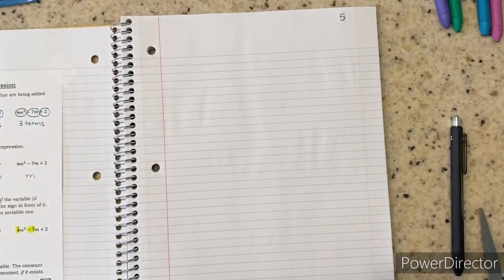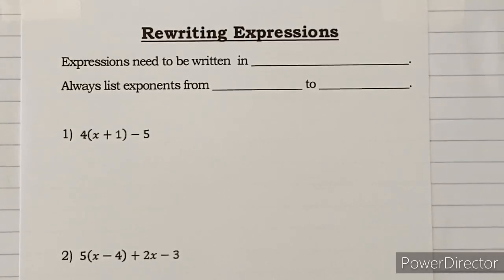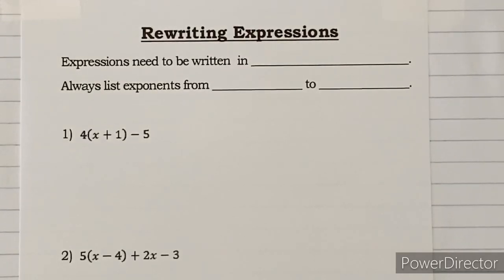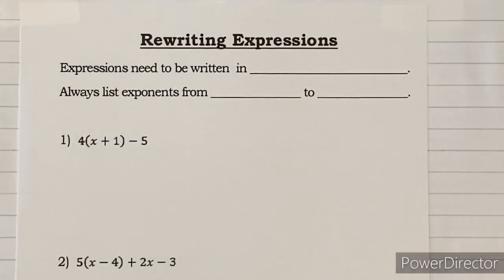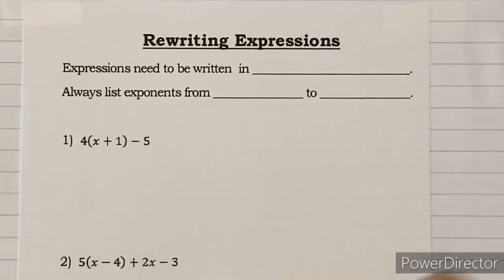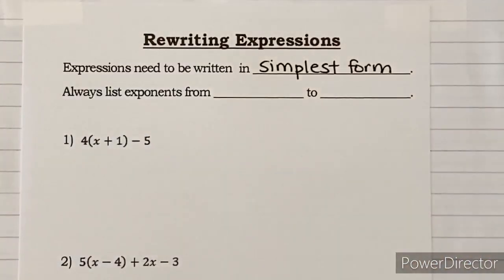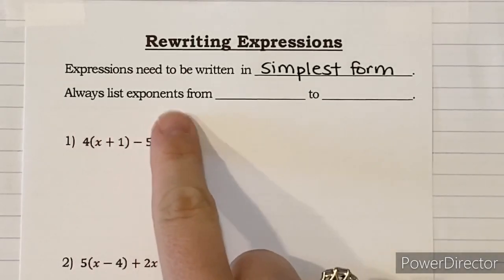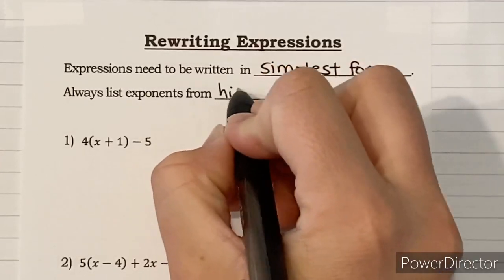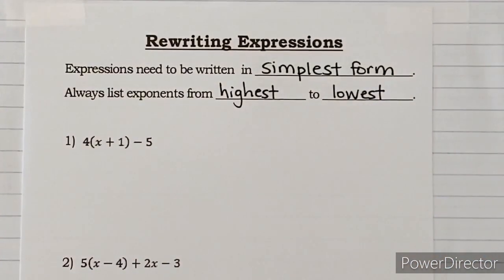Today's topic is called rewriting expressions. This was taught in middle school — your teachers should have covered distribute, combine like terms, and simplify. We're going to do four problems just to make sure everybody's on the same page. Expressions need to be written in simplest form, and that means we always list exponents from highest to lowest — bigger exponents come first, then go down in order.